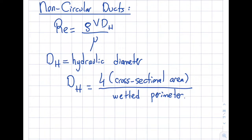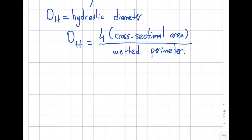I usually hear students ask me about this - why is there a four here? Why not just simply cross sectional area divided by wetted perimeter? Let's take a circular cross section, what will happen? Let's calculate it. Four times what's the cross sectional area of a circular pipe? It's πD²/4.